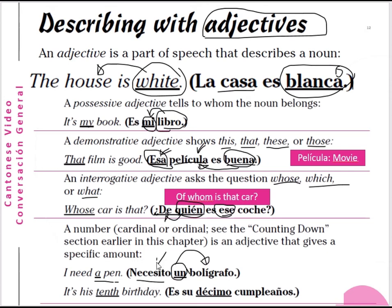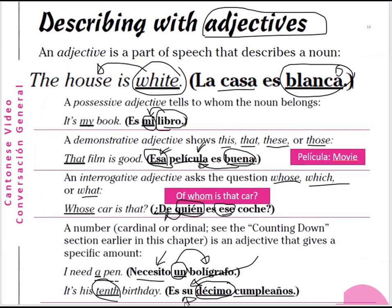Necesito — I need — comes from the verb necesitar, to need or to want. Necesito un bolígrafo — I need a pen. For an ordinal number example: 'it is his tenth birthday' — es su décimo cumpleaños. Décimo means tenth. Su can mean his, her, your, or their — this depends on the context of the sentence. Es su décimo cumpleaños — it could be his, her, or your tenth birthday, so we need the whole passage to know which.